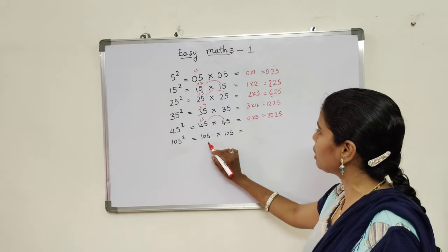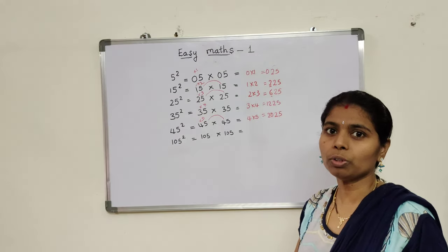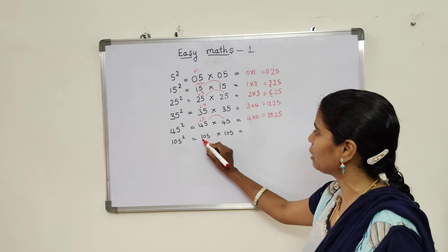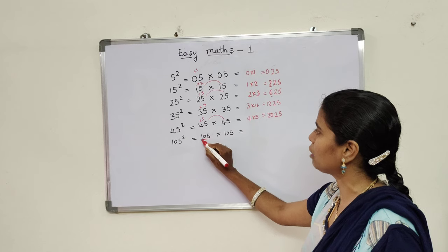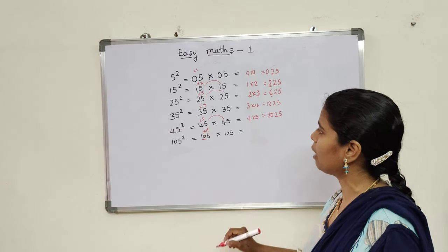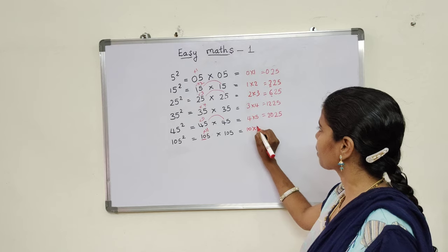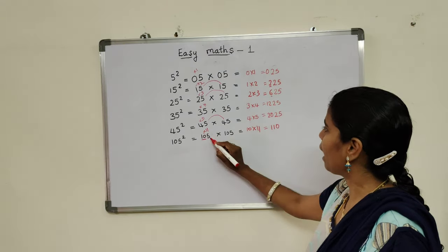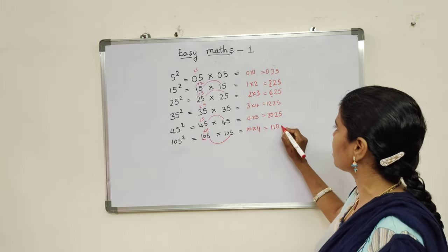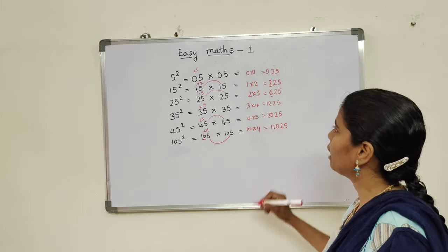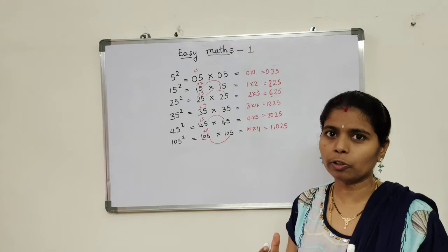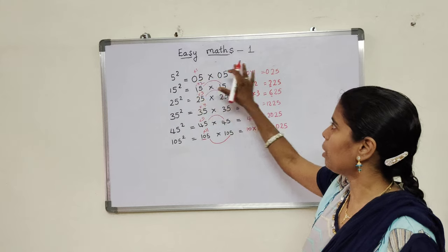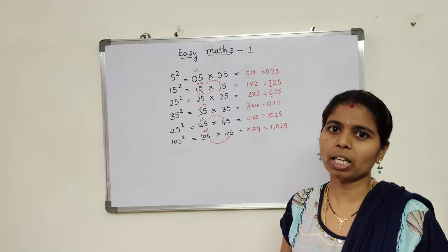Now next comes 105 square. It is 3 digits. How to do 3 digits? Don't get confused. Here also simple technique that only you should follow. Take 2 digits. You should take 2 digits, that is 10. The number higher than 10 is 11. So 10 into 11 is how much? 110. And directly multiply 5 fives are 25. Like this, till how many numbers also you can do squares ending with 5. This is the simple way of calculating the squares which end with 5.